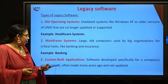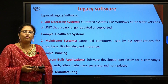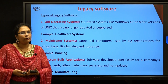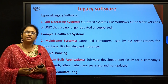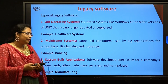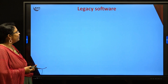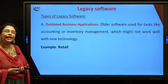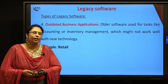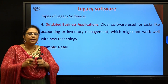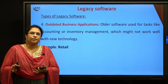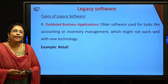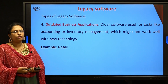The next type is custom-built applications. You can take examples of factories and manufacturers where equipment is running with the help of software. They are old equipment with older softwares, but since the company has been established for a long time, they are still in use. The next type is outdated business applications — for example, retail markets and supermarkets where software reads barcodes and generates bills are still using these outdated legacy systems.